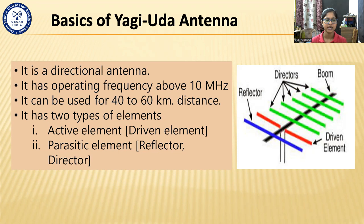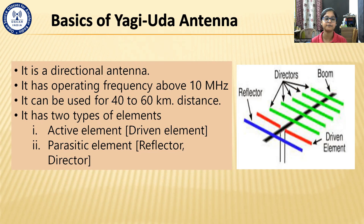It has an operating frequency above 10 MHz. You can make it for frequencies bigger than 10 MHz, but in that case the size of the Yagi-Uda antenna will also increase, so it is usually used at 10 MHz and above. It can be used for a coverage distance of 40 to 60 km. You can also increase the distance of coverage, but you will need to increase the gain of the antenna accordingly. The Yagi-Uda antenna has two types of elements: active elements and parasitic elements. Active elements are those connected to the power supply, and parasitic elements are the opposite — not connected to the power supply. This applies to every antenna.